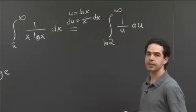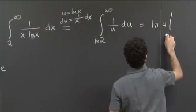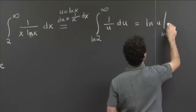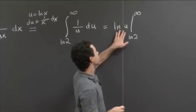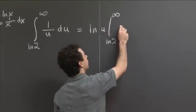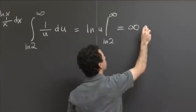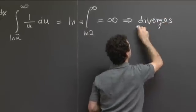Now this is an easy integral. This is just ln of u between ln 2, which again really doesn't matter, and infinity. And we see that at the upper bound, we get ln of infinity, which is infinity. So this thing is infinity. So our original series diverges.